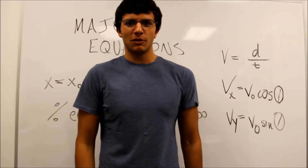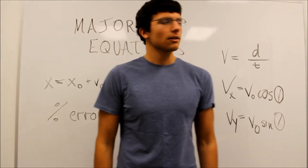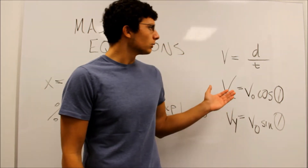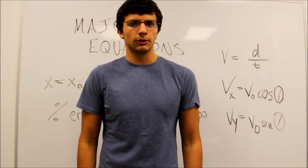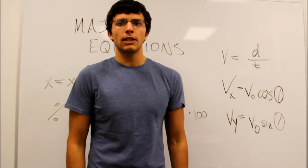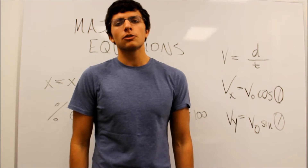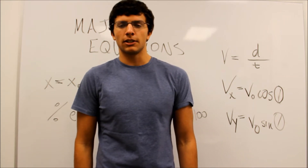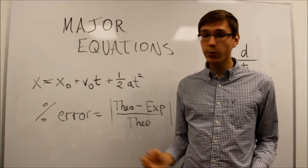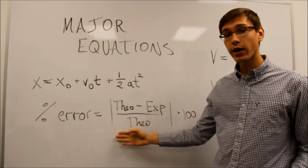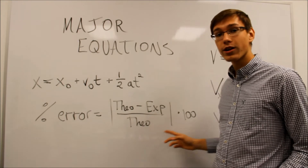However, you may notice that we are missing the initial velocity for our kinematics equation. To find this, we must use the derivation of the v equals d over t formula. Using principles of triangles and our given angle, we will find the velocity of the y component, which will also serve as our initial velocity. This will be explained further in our next section about derivation. Lastly, we need to calculate error using the percent error formula: the absolute value of theoretical minus experimental over theoretical, times 100.